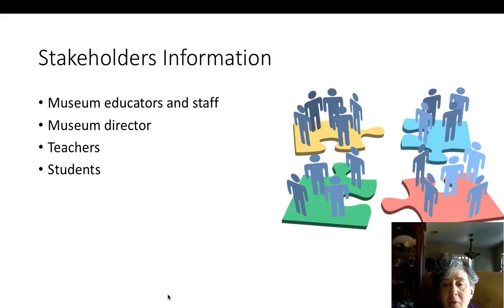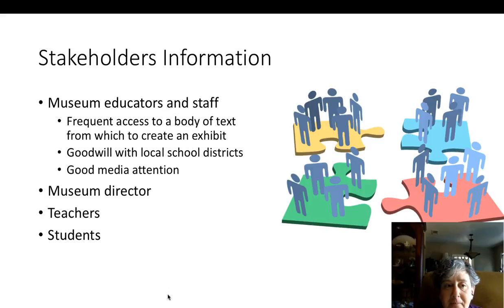There are four primary stakeholders: the museum educators and staff, the museum director, the teachers, and of course the students. The museum educators will be getting access to halfway-completed exhibits. They'll be getting a body of text, diagrams, and sketches that they can use to finish the exhibit design. They'll also get goodwill with the local school districts and possibly good media attention.